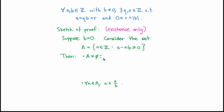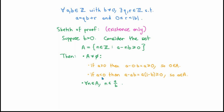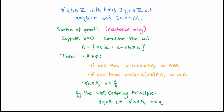Rearranging the condition that a - Nb is bigger than or equal to zero gives that N is less than or equal to a over b, so the elements of the set are bounded above. How do we know that the set is not empty? Let's divide the consideration into two cases. If the integer a happens to be bigger than or equal to zero, then I can take N to be zero, and since a - 0·b = a, which is bigger than or equal to zero, zero is an element of 𝒜, so 𝒜 is not empty. The other case is if a is less than zero. Here I can take N to be a. Then a - a·b = a(1 - b), and since b is an integer bigger than zero, 1 - b is less than or equal to zero, and since a is negative, a(1-b) is bigger than or equal to zero. So this guarantees that the integer a is an element of the set 𝒜. In either case 𝒜 is not empty, so by the well-ordering principle the set 𝒜 has a largest element.